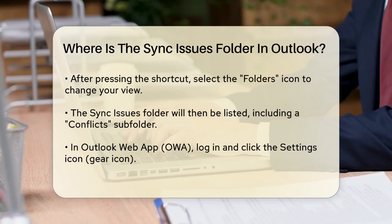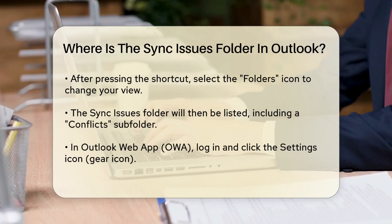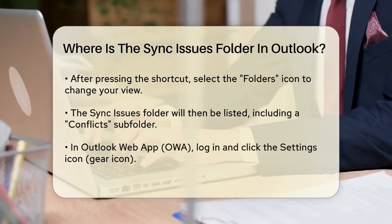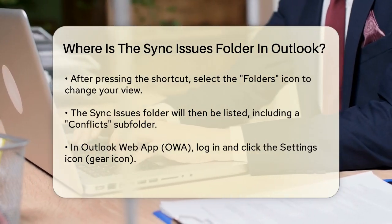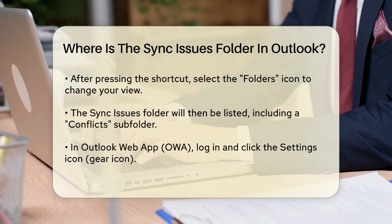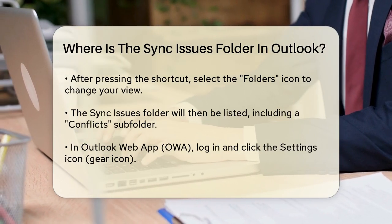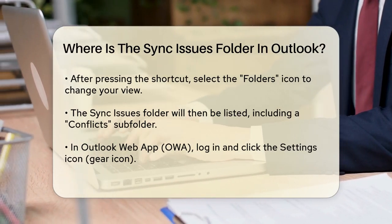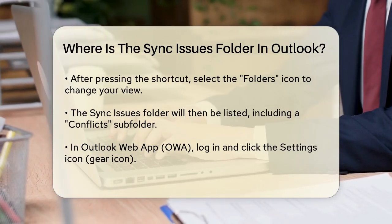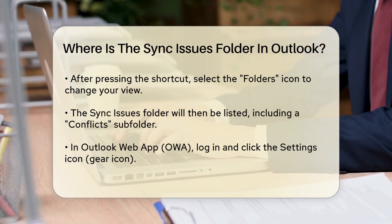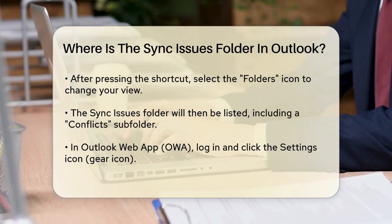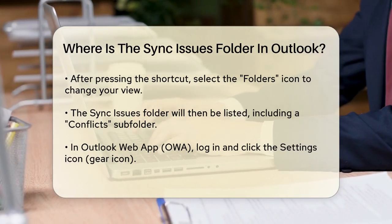Once you do this, your Outlook view will change and you'll see the Sync Issues folder listed. You can then select and open this folder to view its contents, including the Conflicts subfolder where synchronization conflicts are stored.